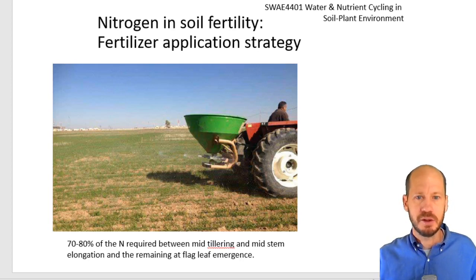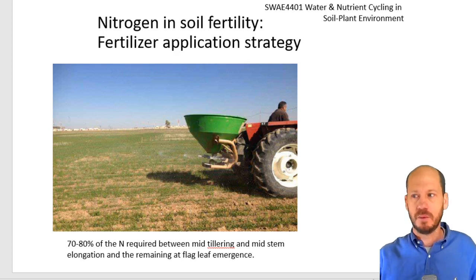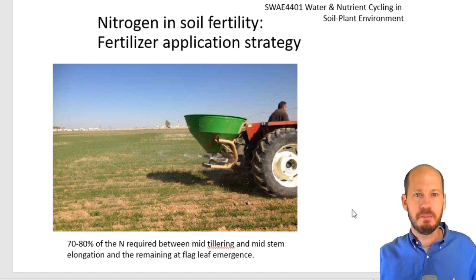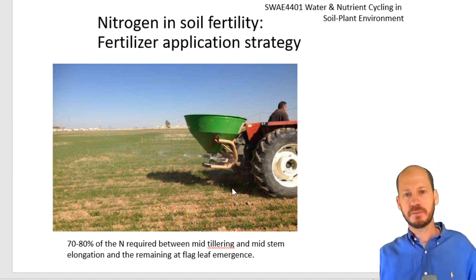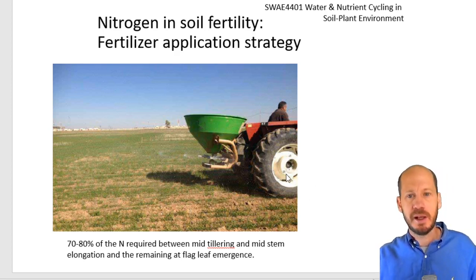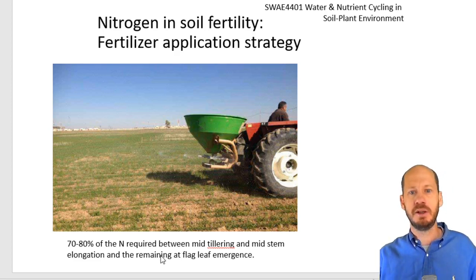Now let's talk about other strategies for fertilizer application. You should think about when the crop will need the most nitrogen — when there is the highest accumulation of plant biomass, that is when you need to apply more nitrogen. Try to fraction applications as much as possible. If the plants are in a fruiting phase and not growing much, they do not need as much nitrogen — do not apply in that phase. Apply nitrogen during the parts of the growth cycle where it is most needed.